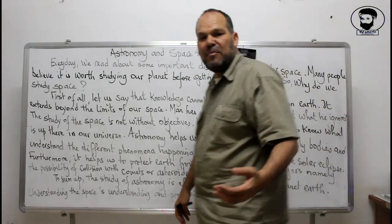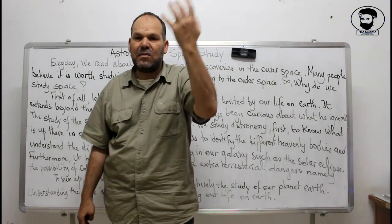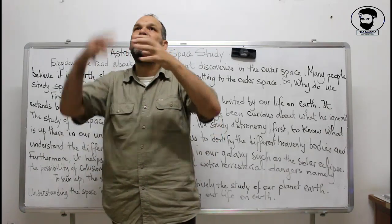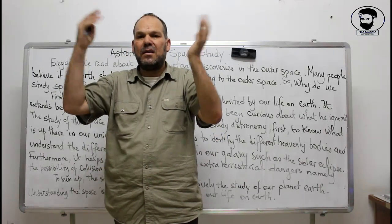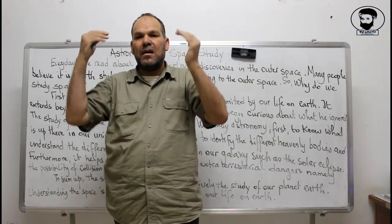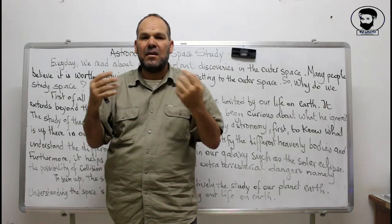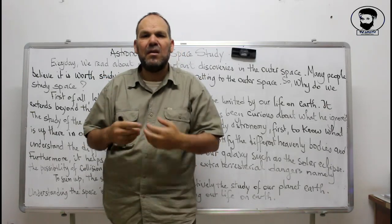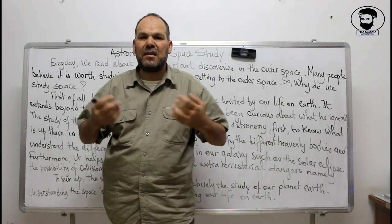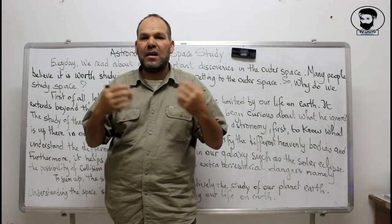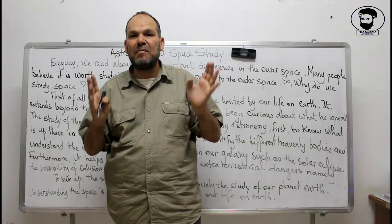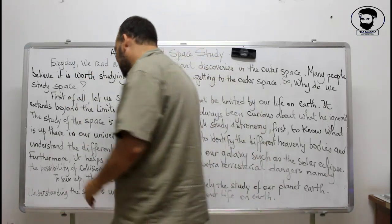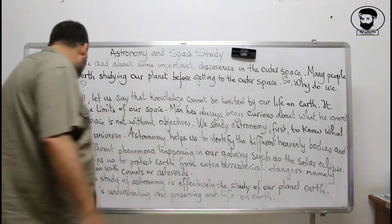All these phenomena happen in our galaxy — such as, for example, a solar eclipse. When a solar eclipse happens, we understand why and what this phenomenon is. So it is a natural phenomenon — it's not something supernatural, it's not something dangerous, but it is something naturally happening in our space.